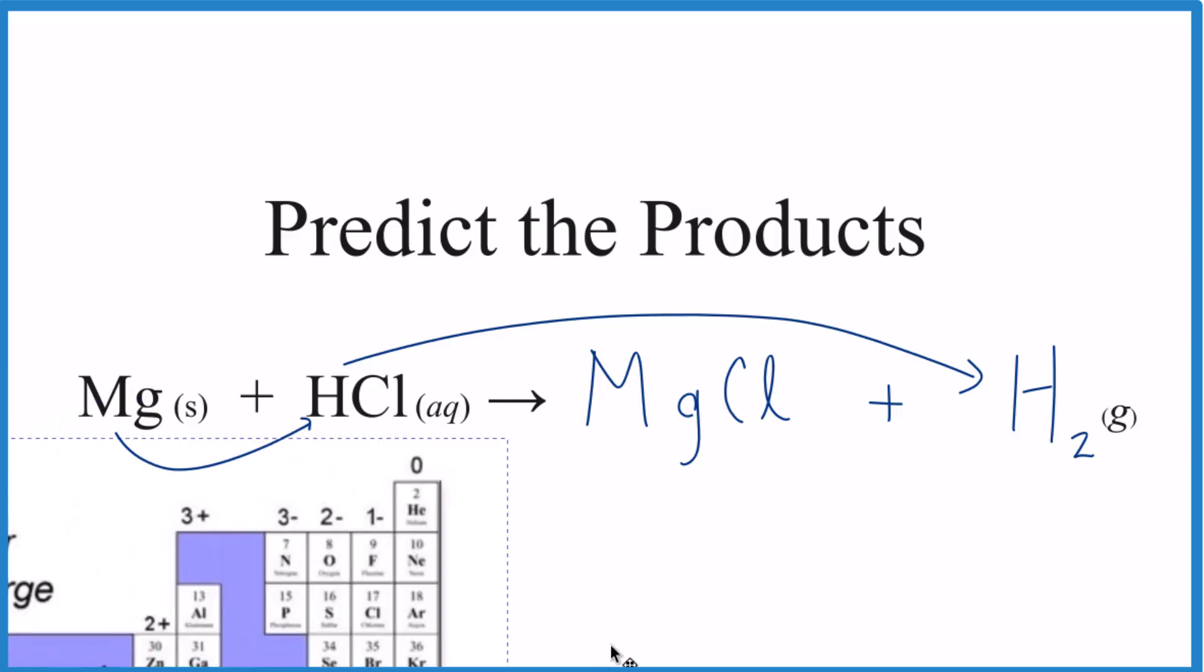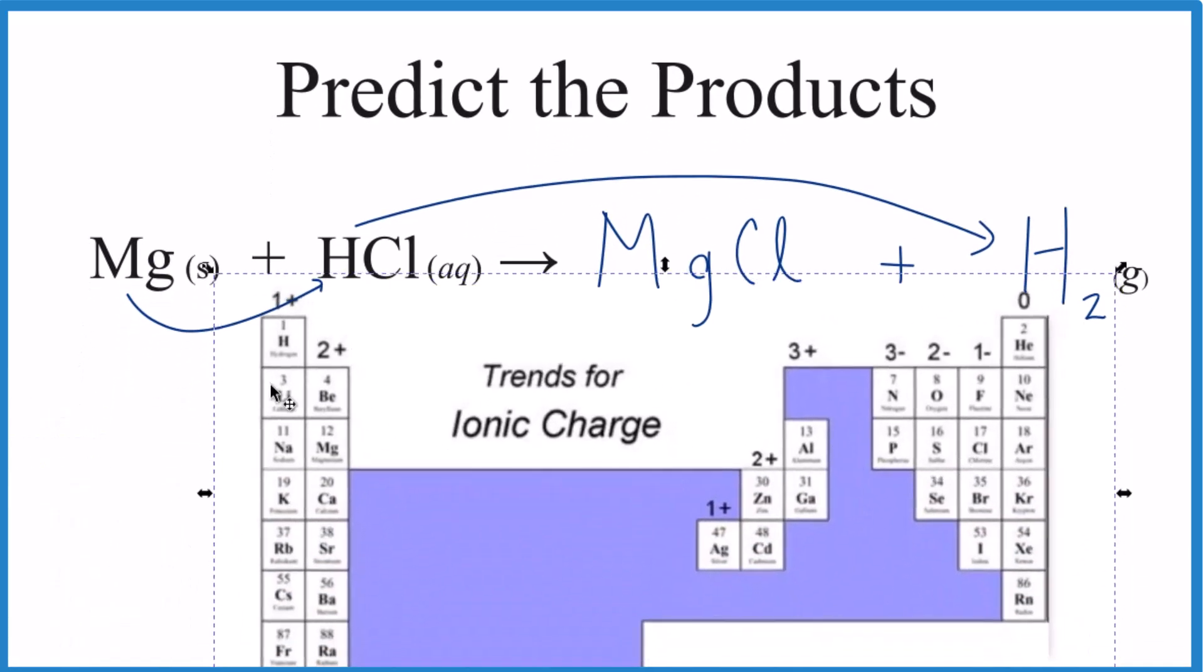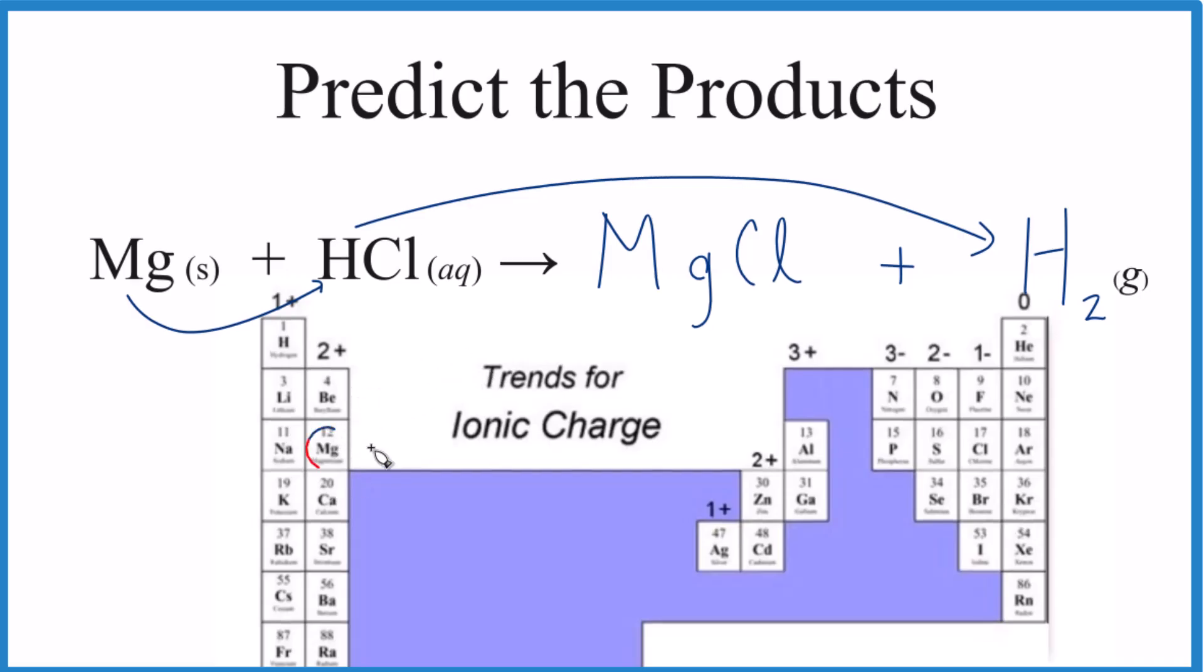So magnesium on the periodic table, that's in group two. Right here. It's going to be two plus. Chlorine, that's over here. That's going to be one minus. And you can see, for the charge to add up to zero, we're going to need two of these chloride ions to balance the charge.